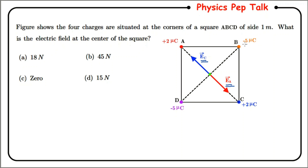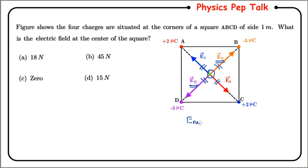The electrical field due to minus five micro coulomb at point B is directed towards B, since it is a negative charge. The electrical field due to minus five micro coulomb at point D is directed towards corner D. Fields EB and ED are equal in magnitude but opposite in direction, so they cancel each other as well. Therefore the net electrical field at the center is equal to zero, that is E net equals zero. Option C is the correct answer. Even intuitively, without solving, you can directly answer the question.